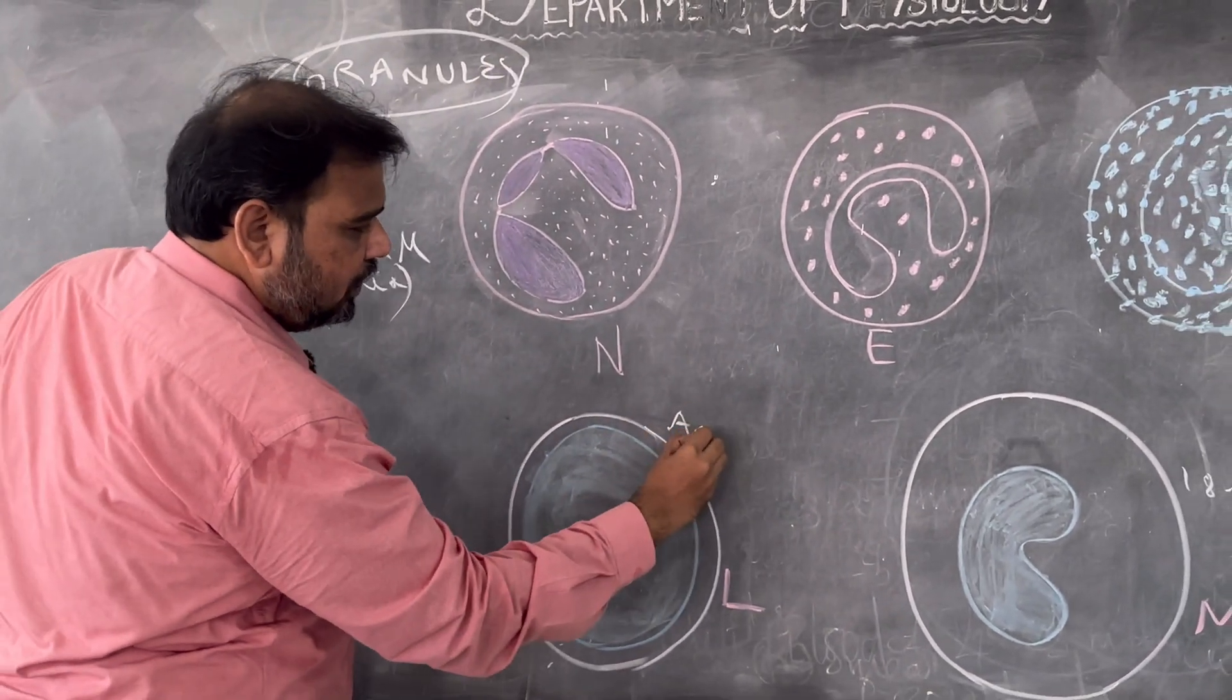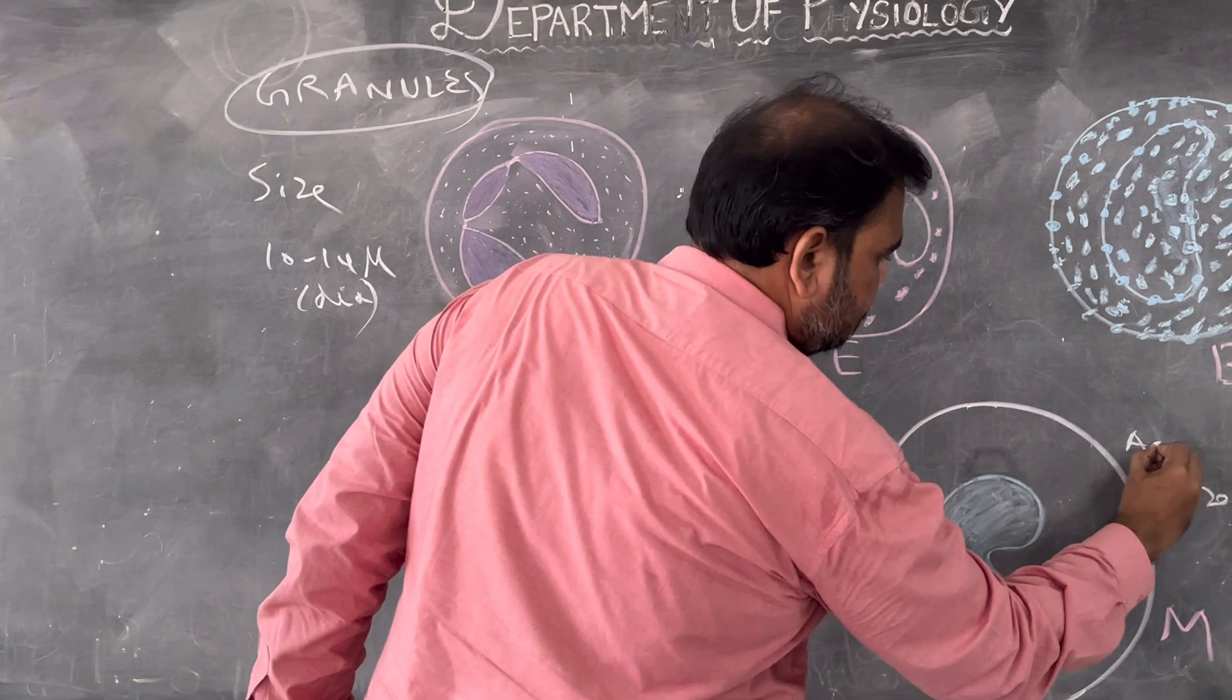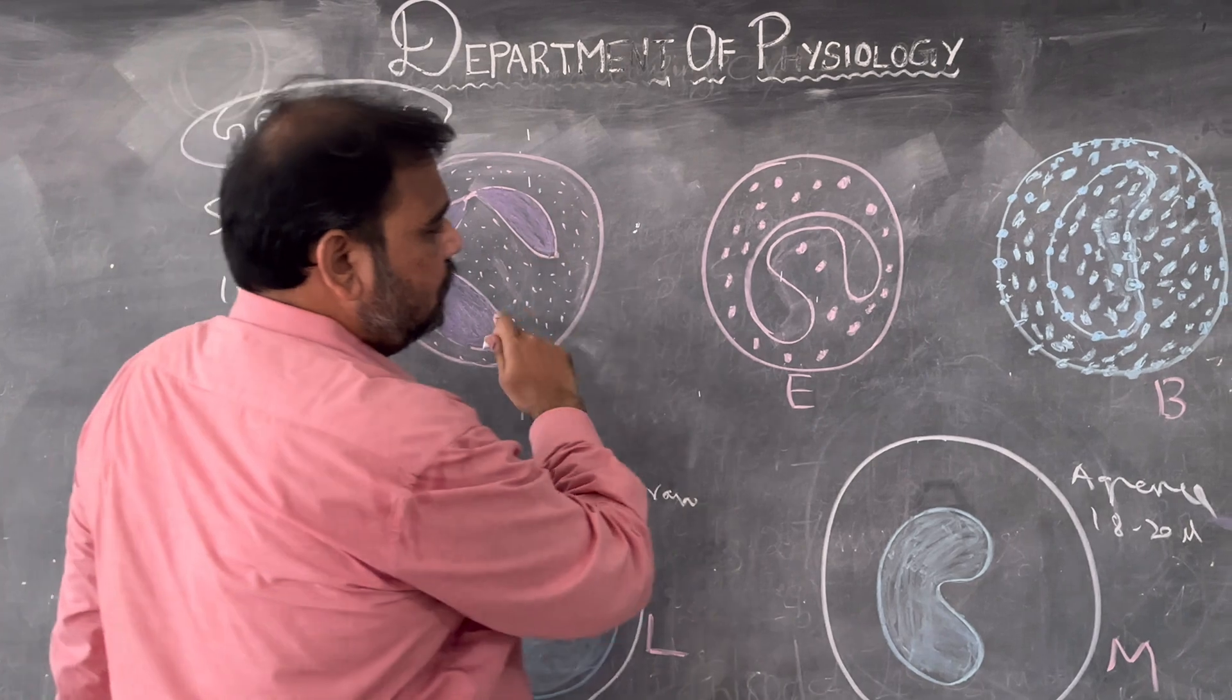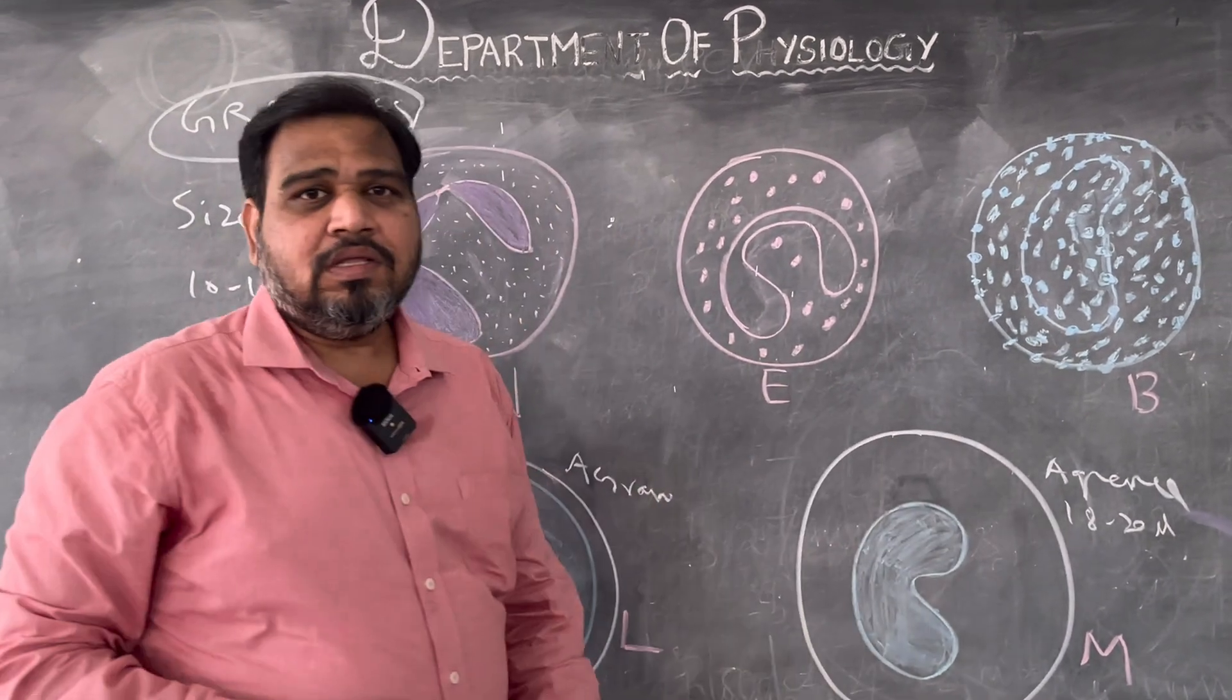Obviously you know, lymphocyte and monocyte are agranulocyte, and all this neutrophil, eosinophil, basophil are granulocytes.